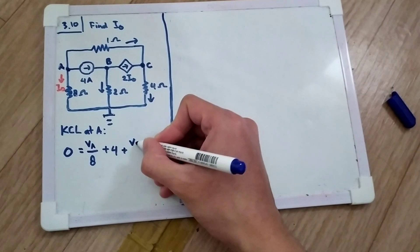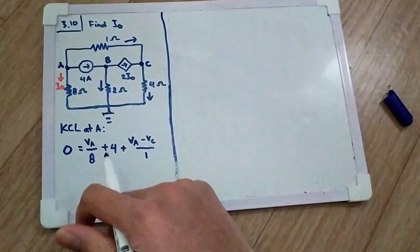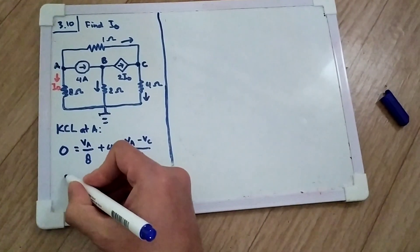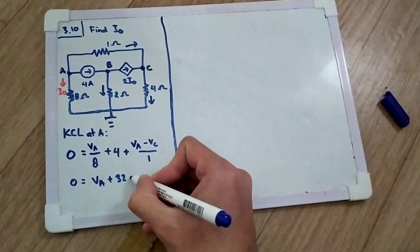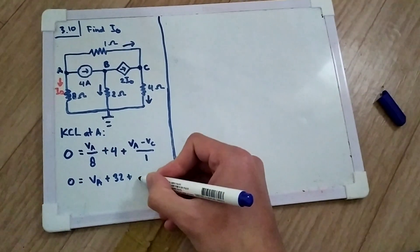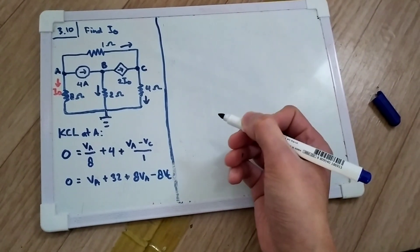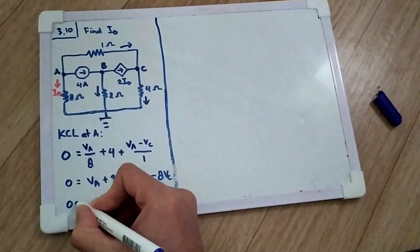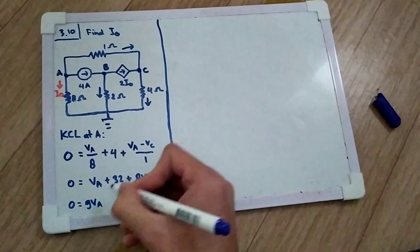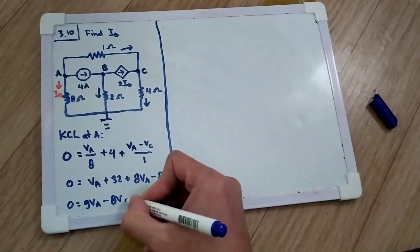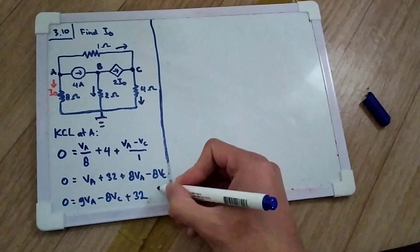We have VA minus VC divided by one. We multiply both sides by eight, so zero is equal to VA plus 32 plus 8·VA minus 8·VC. This gives us equation one: zero equals 9·VA minus 8·VC plus 32.